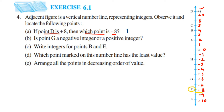F is the answer for the first one. The next question is: is point G a negative integer or a positive integer? Point G is located here — you can see it is lying below zero, which is the negative side. G is at minus 6, so it is obviously a negative integer. The answer for this question is: a negative integer.